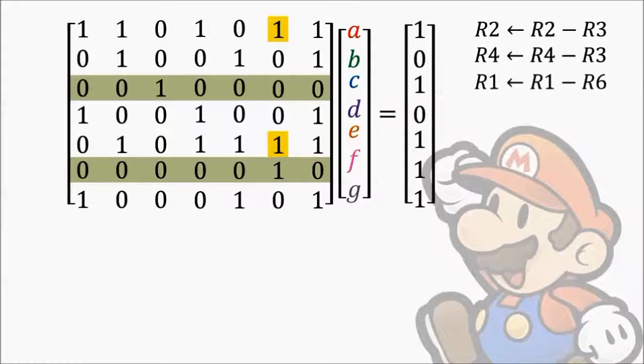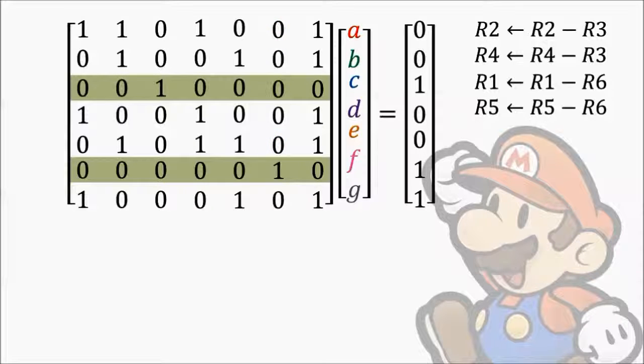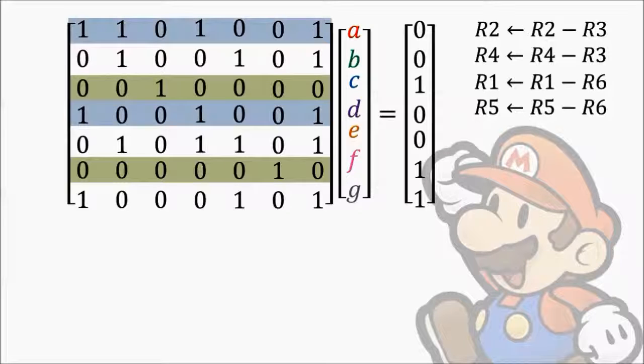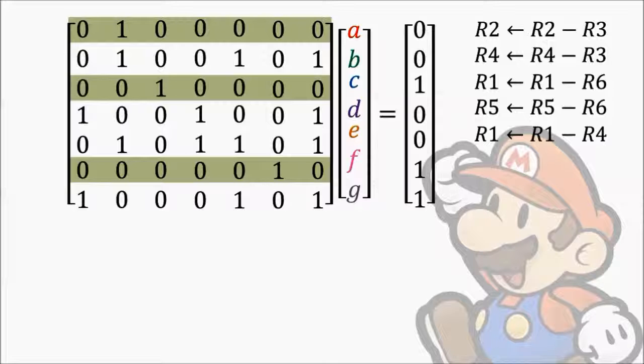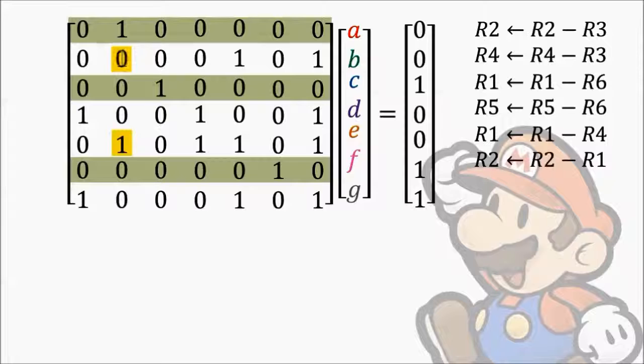The next thing to notice is that row 1 and row 4 look very similar. We can try subtracting row 4 from row 1. At this point, row 1 only has a single non-zero entry, so we're done with it as well. Again, we can use this row to easily remove ones in other rows through subtraction.